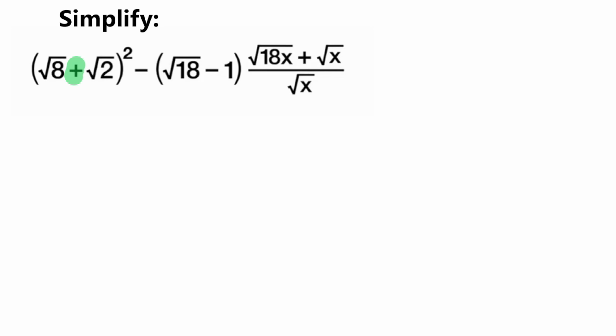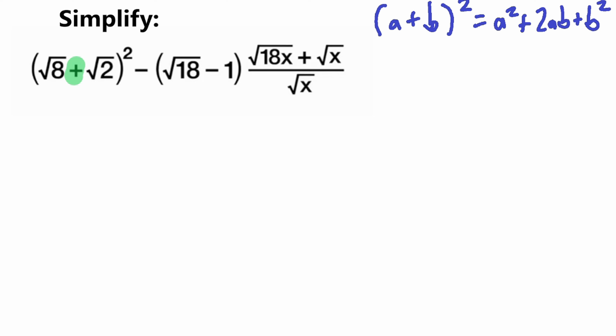Do you recall a certain formula for this specific situation? There's a formula that states that a plus b squared is equal to a squared plus 2ab plus b squared. In this case, our a will be square root of 8 and our b will be square root of 2. So let's use this formula to simplify the first part of our equation.